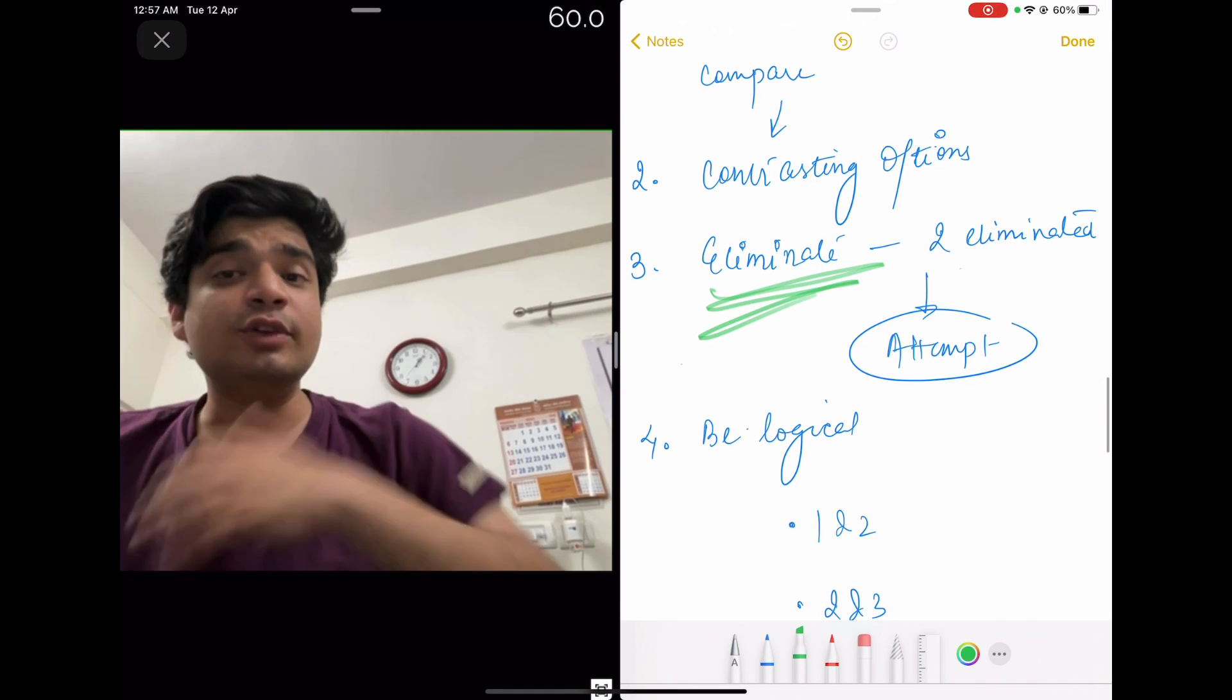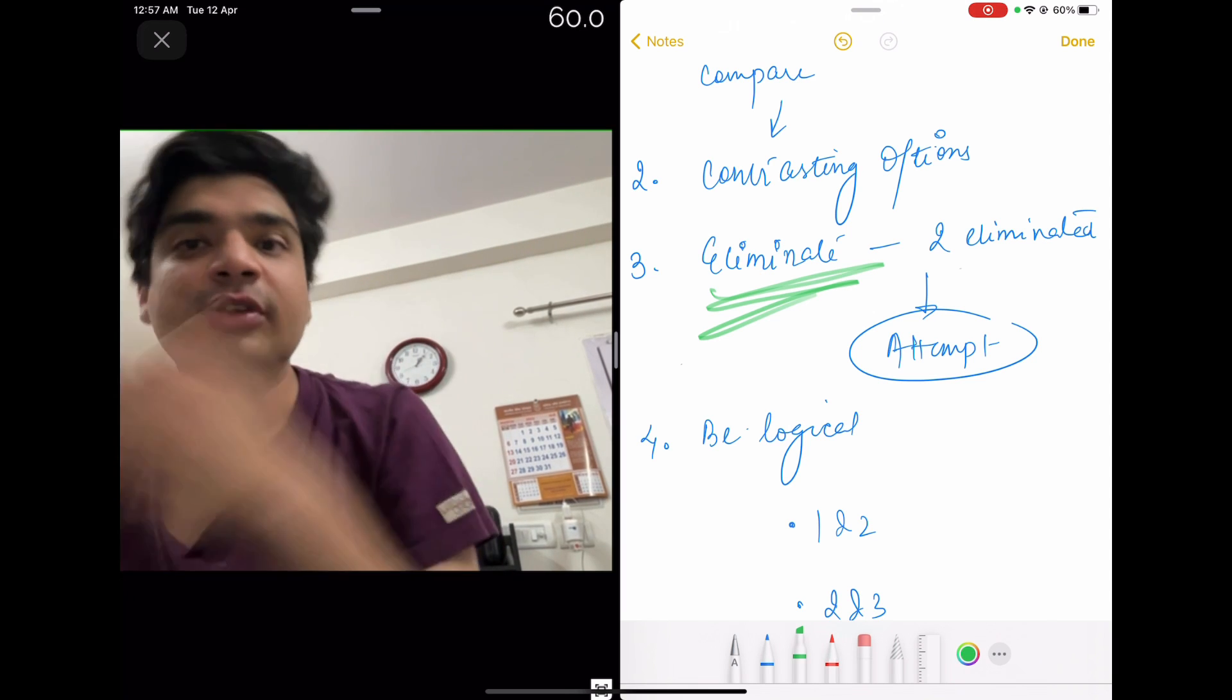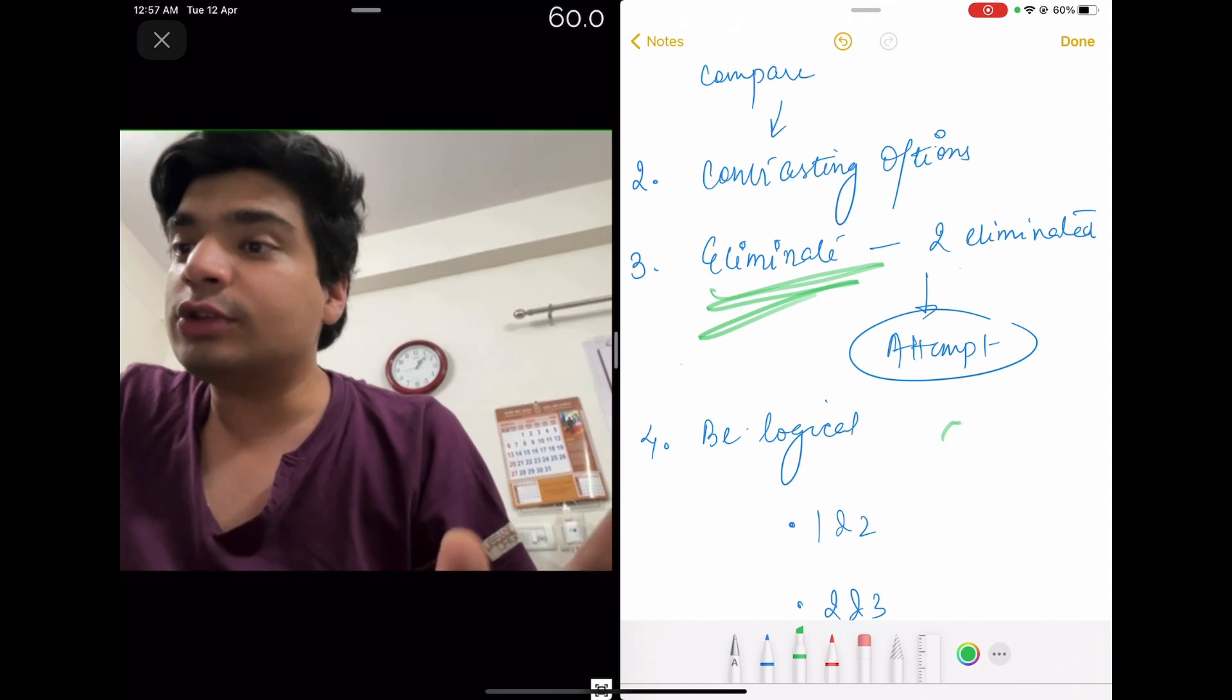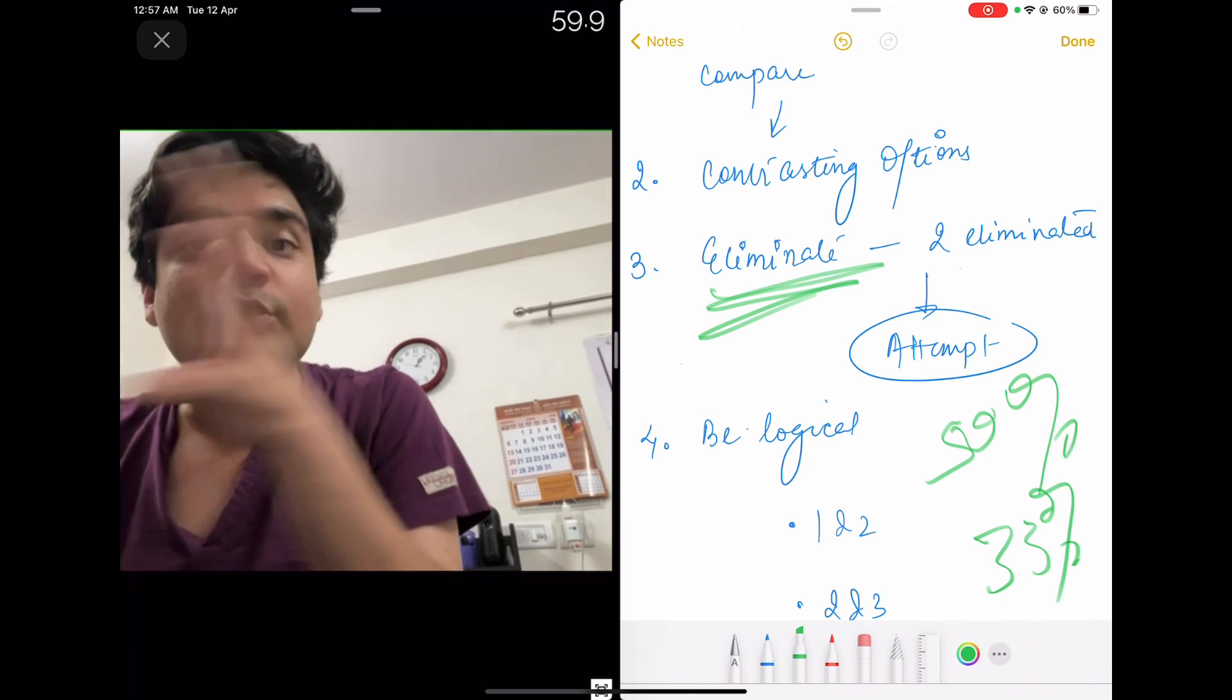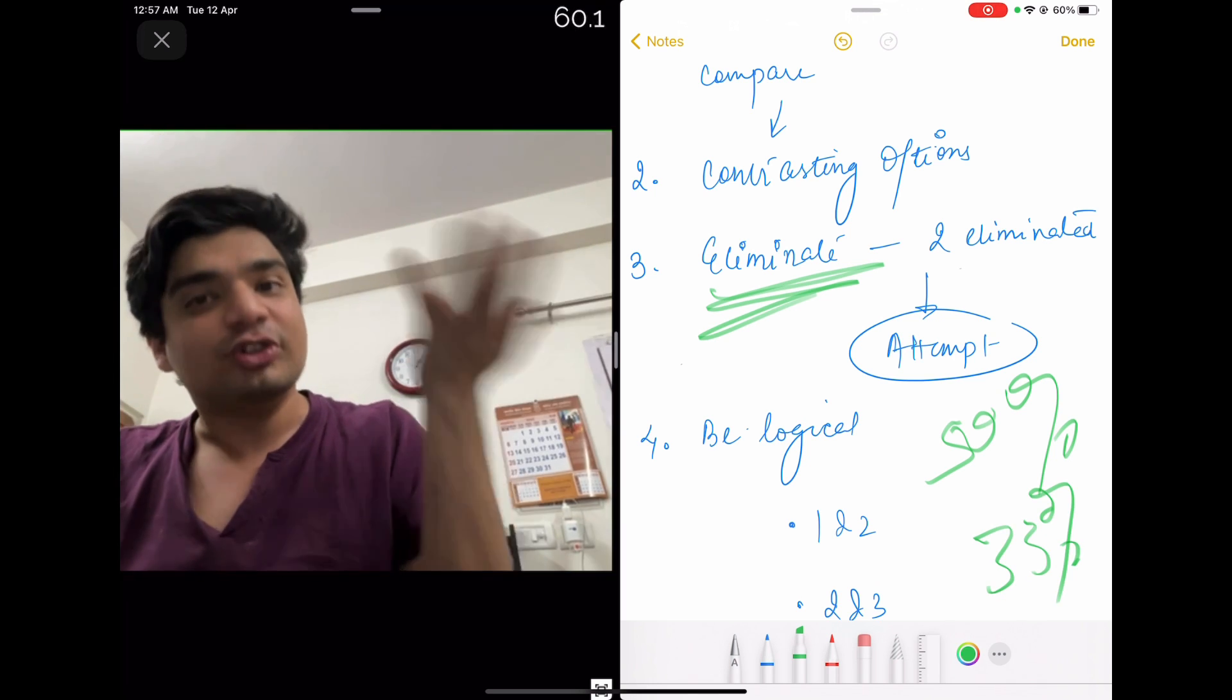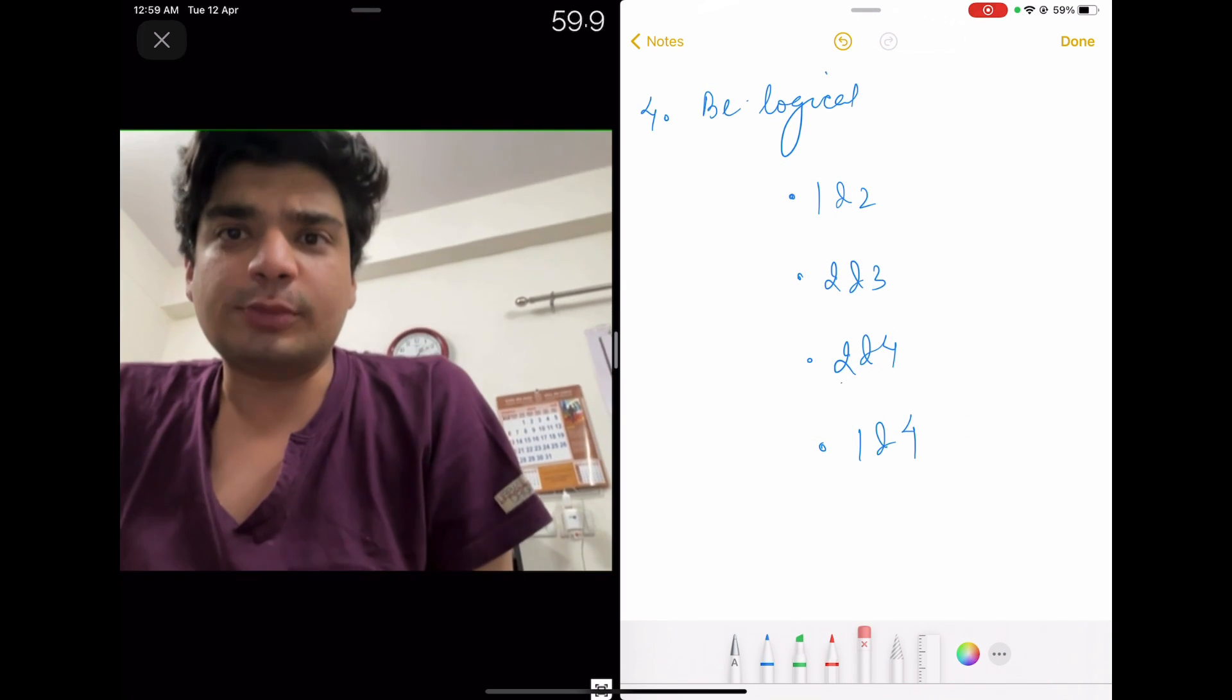Eliminate. Always try to eliminate. Even if you don't know the answer to the question, try to eliminate one or two options. If you have eliminated two options, attempt that question. Because your 50% chance will get this correct, negative marking is 33%. So if you have 3 out of 6 questions solved, then you are going to be positive. Try to attempt maximum questions as well. Last but definitely not the least, just be logical in your approach.